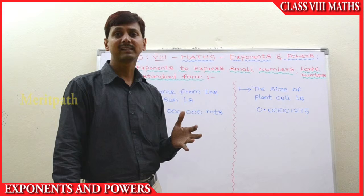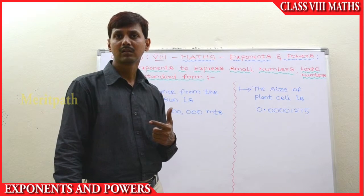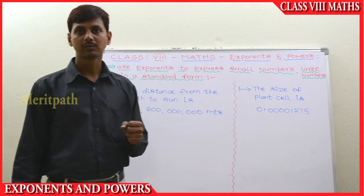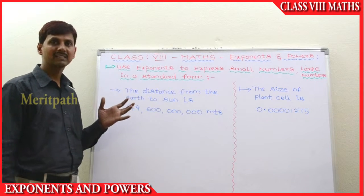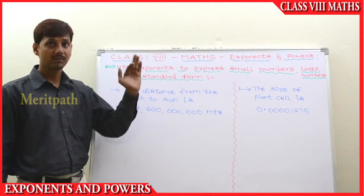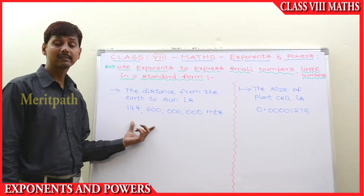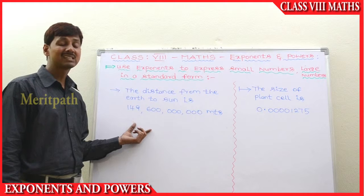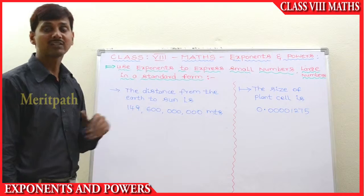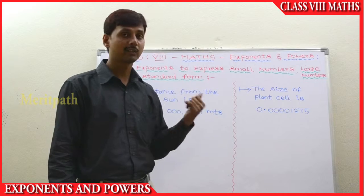Let's see how to represent the smallest numbers and largest numbers in standard form using the laws of exponents. We have some examples here. This is the largest number we have taken, and this is the smallest number. We need to represent the largest number in standard form using the laws of exponents, and similarly the smallest number in standard form using the laws of exponents.